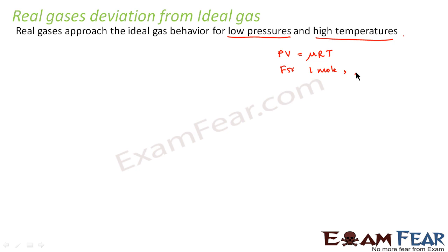So in that case μ will be equal to 1. So PV will be equal to RT. Or we can say that PV by RT will be equal to constant. So PV by RT becomes a constant value. So how the graph should be? The graph should be a straight line.